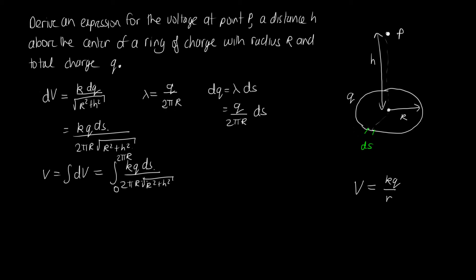Now none of these things vary with length around our loop. So all of these things are just constants. So we can write this as kq over 2πR times √(R² + h²).